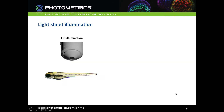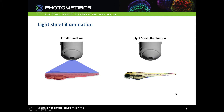With epi-illumination, the whole sample is subjected to fluorescence illumination, so even when imaging just one Z-section as in confocal microscopy, the whole sample is being bleached and damaged. Whereas in lightsheet illumination you only illuminate the Z-section you are imaging. This is especially valuable in large samples where multiple Z-sections are necessary to build up a 3D image, where confocal would result in a lot of excess photodamage.